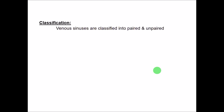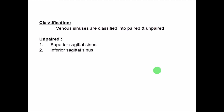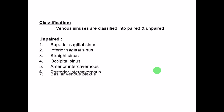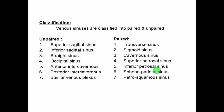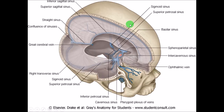The dural venous sinuses are classified into two types: paired and unpaired. The unpaired sinuses are: superior sagittal sinus, inferior sagittal sinus, straight sinus, occipital sinus, anterior intercavernous sinus, posterior intercavernous sinus, and basilar venous plexus. The paired sinuses are: transverse sinus, sigmoid sinus, cavernous sinus, superior petrosal sinus, inferior petrosal sinus, sphenoparietal sinus, petrosquamous sinus, and middle meningeal sinus.